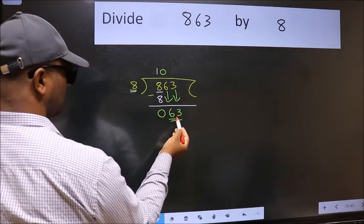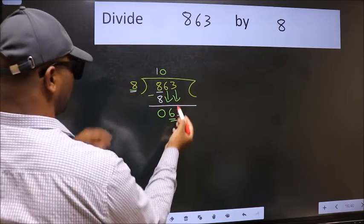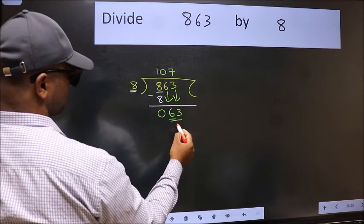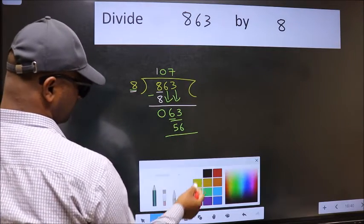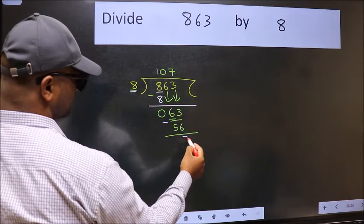Now 63. A number close to 63 in 8 table is 8 sevens 56. Now we should subtract. We get 7.